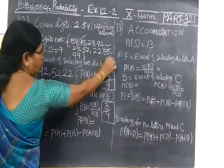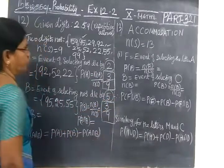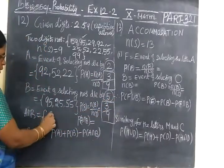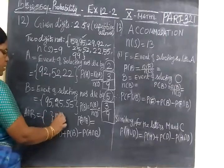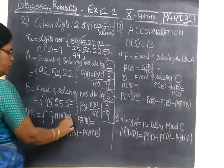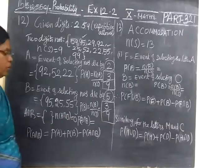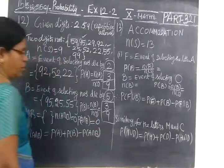So I think it is null set only. You can't find any 2-digit numbers which are divisible by 2 as well as 5. So that will be definitely null set. So null set means N(A∩B) is 0, so P(A∩B) also 0.